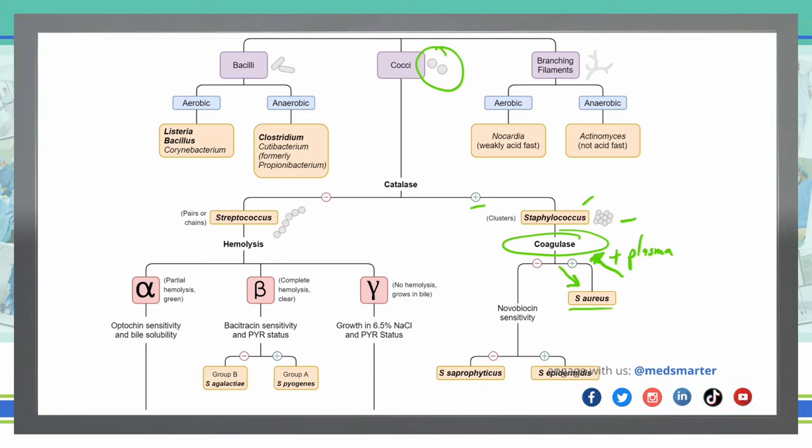If it's coagulase negative, we follow this part of our algorithm down and we check for novobiocin sensitivity. Staph epidermidis and staph saprophyticus have different responses to novobiocin. So if we add novobiocin, which is an antibiotic, to our agar plate with this culture on it, and it is sensitive, meaning that there is no growth of that microorganism, then that means it is sensitive to novobiocin and therefore is going to be our staph epidermidis.